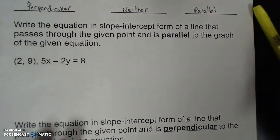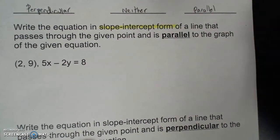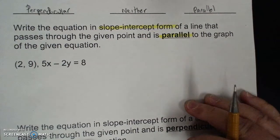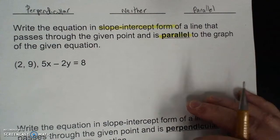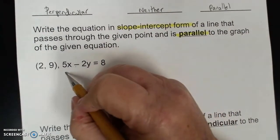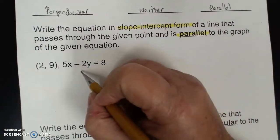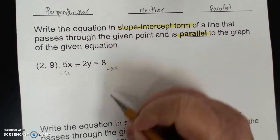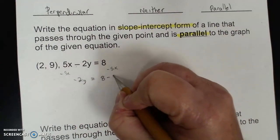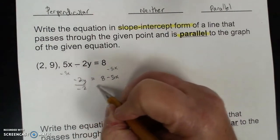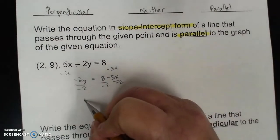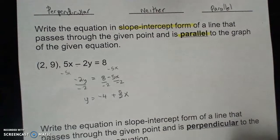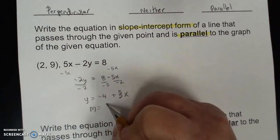Writing the equation in slope-intercept form of a line that passes through a given point and is parallel to the graph of the given equation. First I need to find out what the slope is, so I change the given equation to slope-intercept form. I subtract 5x from both sides: negative 2y equals 8 minus 5x. Divide everybody by negative 2 and I get y equals negative 4 plus 5 halves x. My slope is 5 over 2.